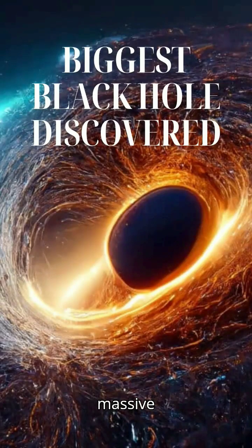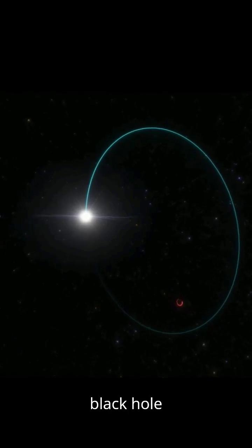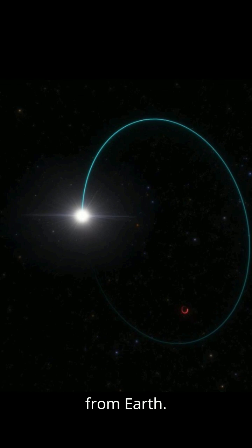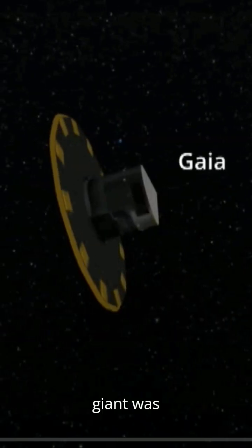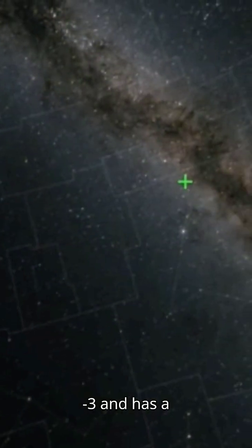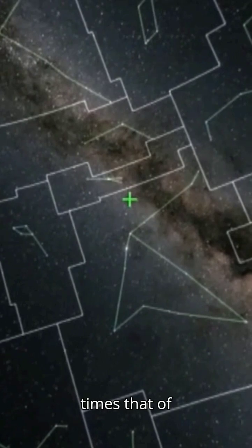Astronomers discovered a massive sleeping giant black hole less than 2,000 light-years from Earth. This sleeping giant was named Gaia BH3 and has a mass that is nearly 33 times that of our Sun.